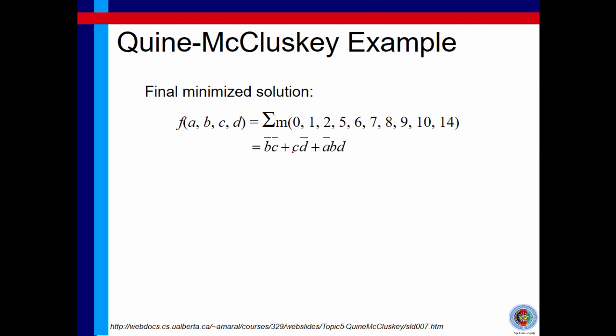We have all essential prime implicants that we need. We just add them as summation of product term, SOP, like this. From the sigma notation of minterms, we get this sum of product of only three essential prime implicants: B bar C bar plus C D bar plus A bar BD. This is our final solution.